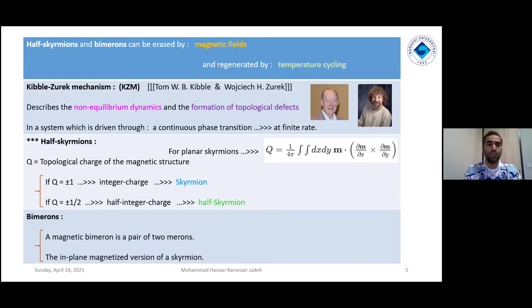About the Kibble-Zurek mechanism, Tom W. B. Kibble, who died unfortunately, and Zurek, the younger man, they described the non-equilibrium dynamics and the formation of topological defects.